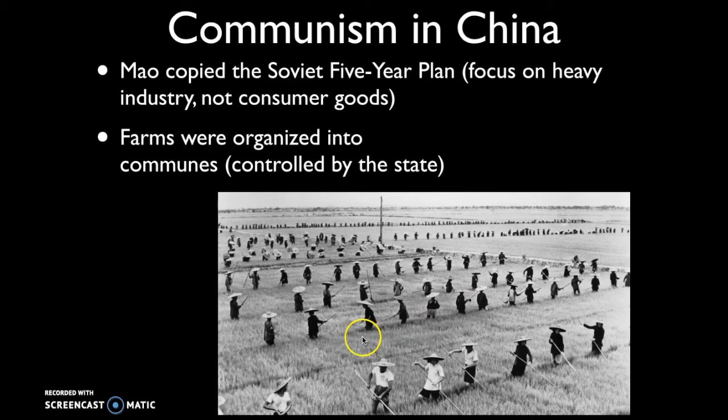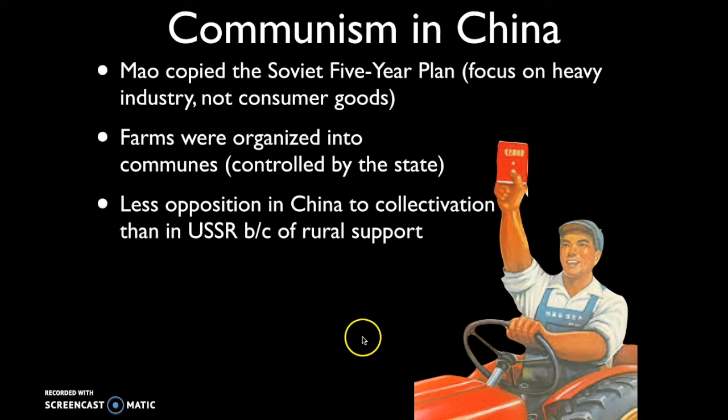The peasants in China loved Mao and fully backed anything he told them to do. This is a significant difference from the Soviet Union, where there was significant pushback from wealthy farmers and even some poor farmers who had just emerged from serfdom. Many Soviet farmers destroyed crops and killed livestock in resistance to turning over their farmland. That just wasn't the case in China — there was far more support for Mao's ideas of collectivization.